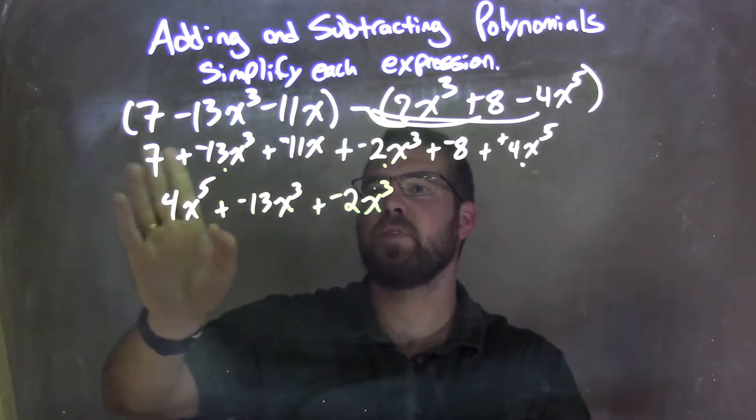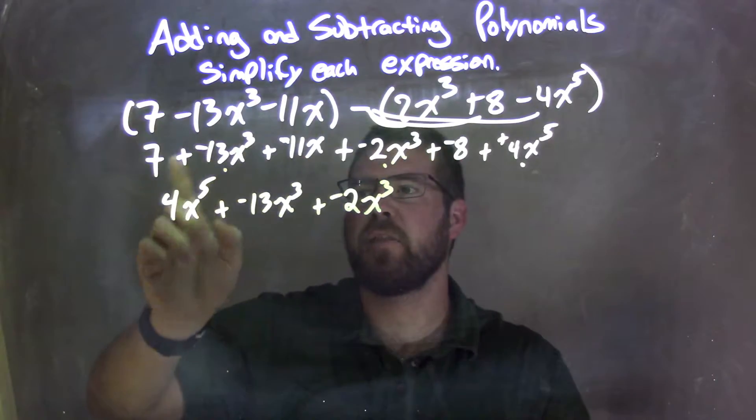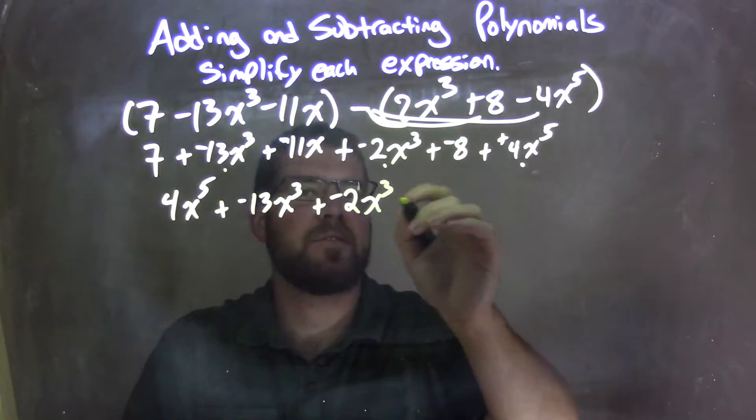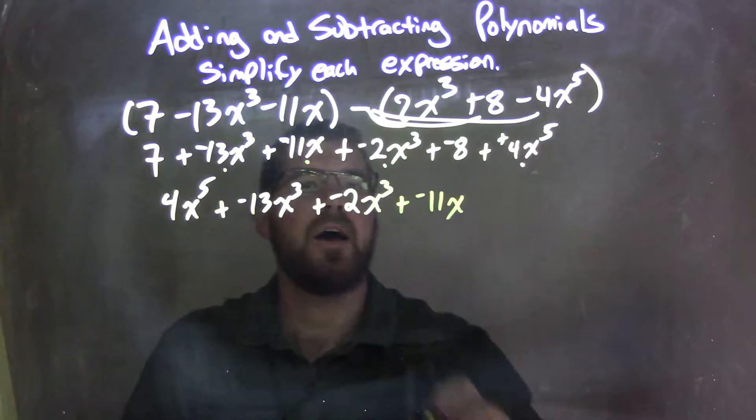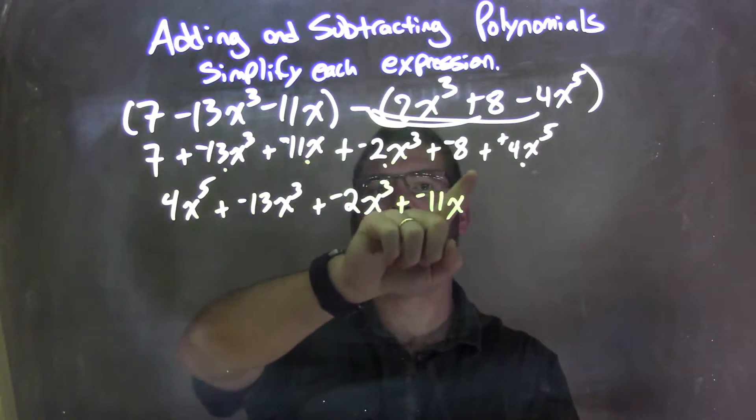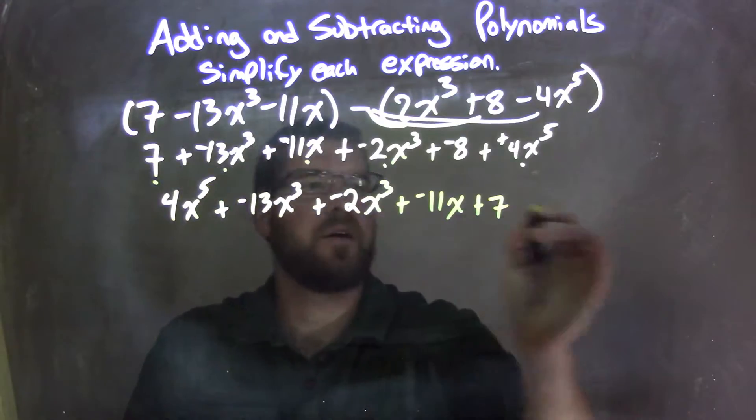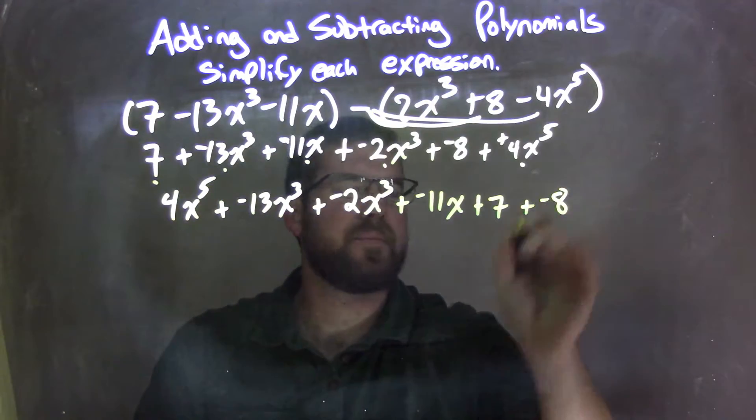I don't see anything else to the 3rd. So the next power, second power, nothing left. First power, the negative 11x to the 1st power. So we have plus a negative 11x to the 1st power. And then nothing else with just x. So we have our two constants. We add 7 and add a negative 8.